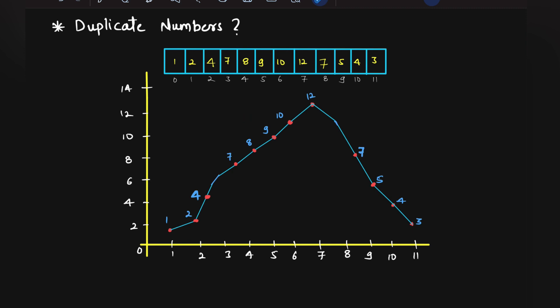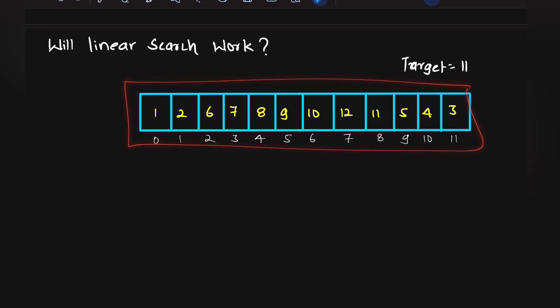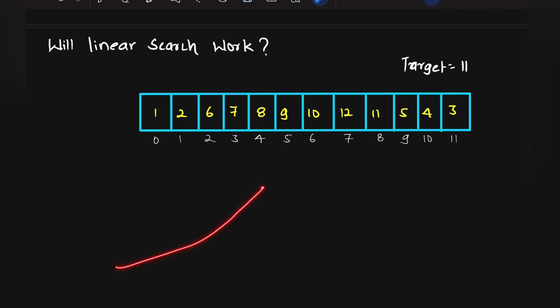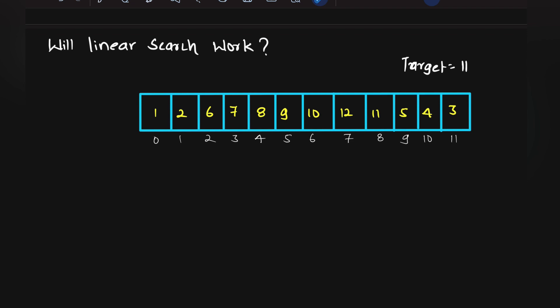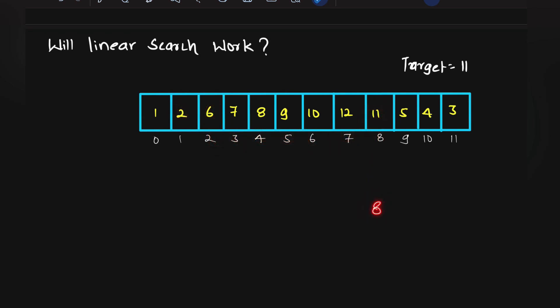We need to find whether the target element is present in the mountain array and return its minimum index. For example, if 11 is present at index 2 and at index 9, we return 2. Linear search seems straightforward — check each element until we find the target — and since the first occurrence gives the minimum index, we return it.